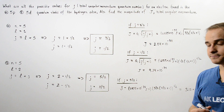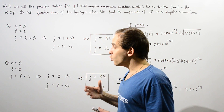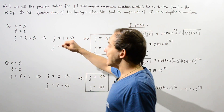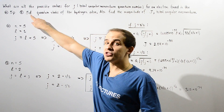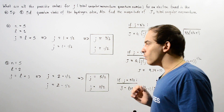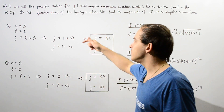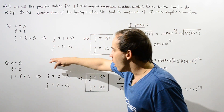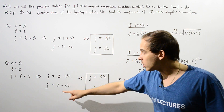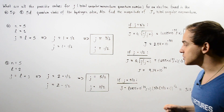Now let's move on to part B, where our electron is found in the 5D quantum state. We still have the same principal quantum number N equals 5, but now our L is no longer 1 — because we're dealing with the D subshell, L is equal to 2. In calculating J, we use the same equation but plug in L equals 2. So one of the J values is given by 2 plus 1/2, which gives us 5/2, or 2 minus 1/2 when the spin quantum number is negative 1/2, giving us 3/2.